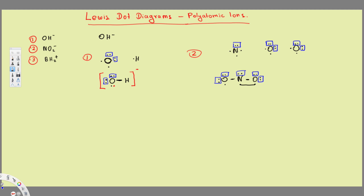Nitrogen has eight electrons already — three bonds is six electrons plus the lone pair is eight. One oxygen has eight: two, four, six, eight. The other oxygen has only seven: two, four, six, seven. So that oxygen needs one more electron to reach octet form. We add one more electron, making the whole thing negative — that's the Lewis structure for NO₂ minus.